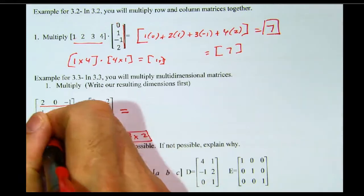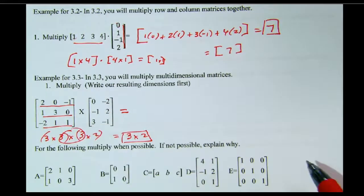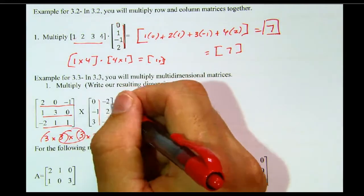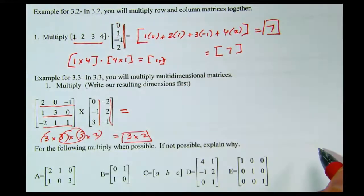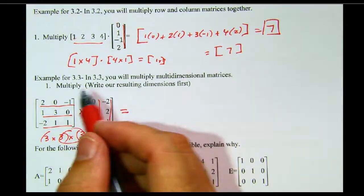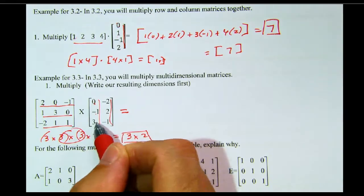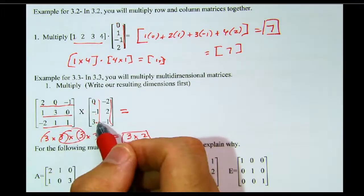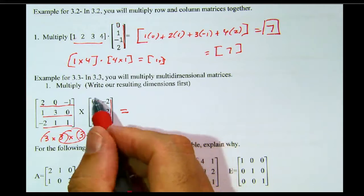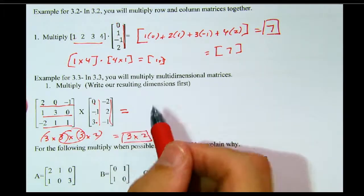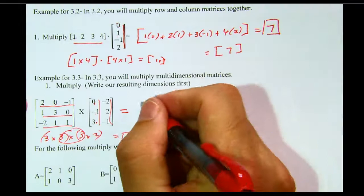First of all, I highly recommend that you draw lines going straight across for the first matrix. Then I recommend that you draw lines going down for the second matrix. Because since these match up, 1, 2, 3, I need to multiply them respectively by 1, 2, 3. This is the first row. This is the first column. So that information will be put into my first row, first column of this matrix right here.